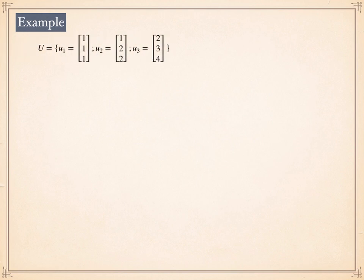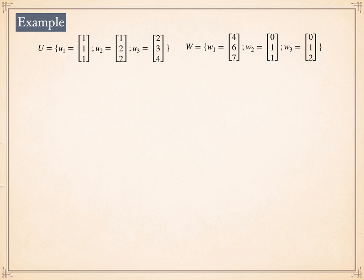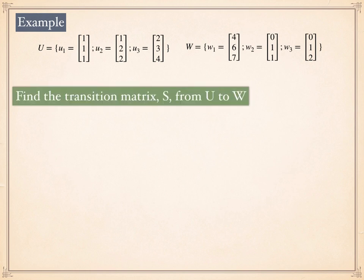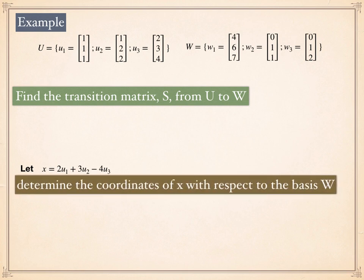Let's look at an example. I have two sets of three vectors in R3: U1, U2, U3, and W1, W2, W3. I know that both sets form bases of R3. The question is: can I find the transition matrix from U to W? And once I find it, if x is a linear combination of U1, U2, U3 with given weights, can I find the coordinates of x with respect to basis W?